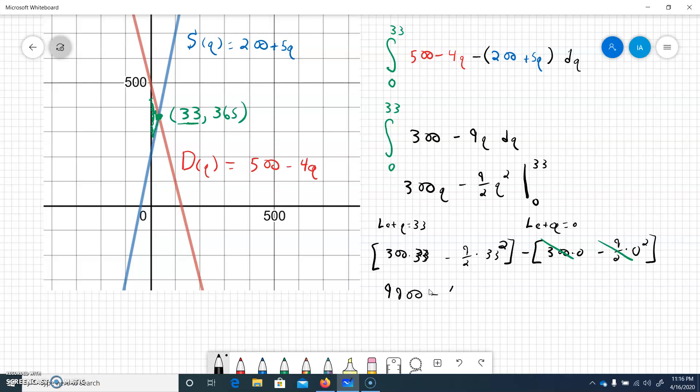And then we'll have minus 33 squared times 9 divided by 2, or 9.5. So the area between those two curves will be the difference of those two, 9,900 minus 4,900 and a half. Let's make this a little bit better. So this is, if I've done it correctly, 4,999 and a half. So what is that? Almost 5,000, 4,999 and a half. So that would be the area between those two curves.